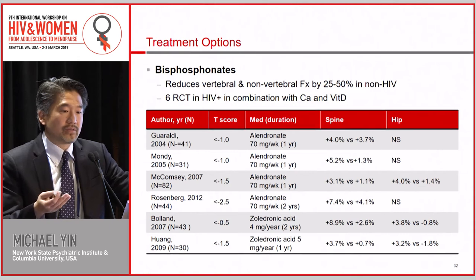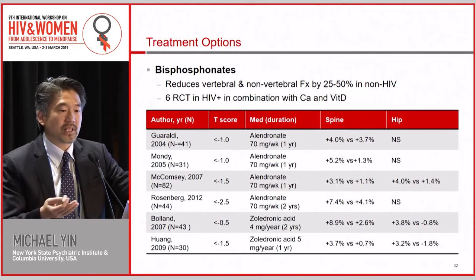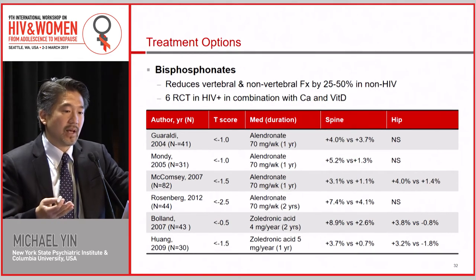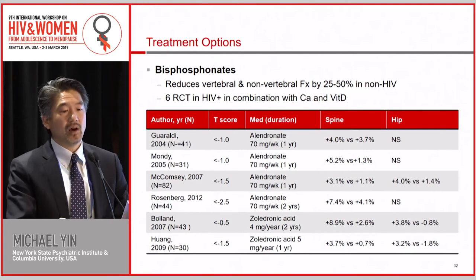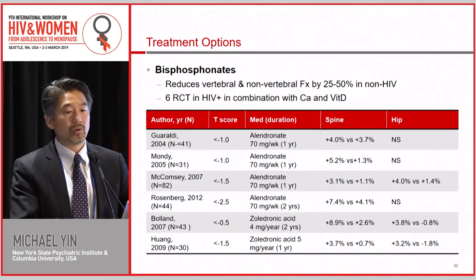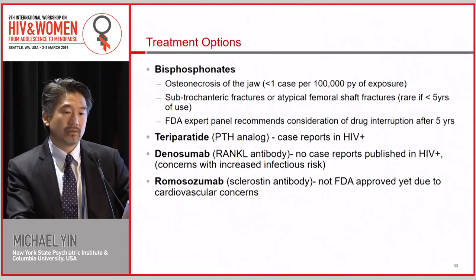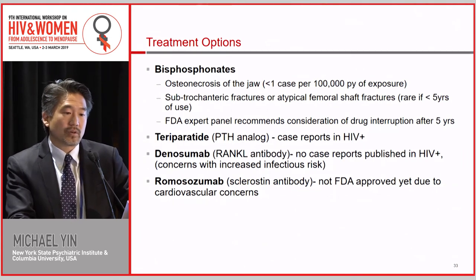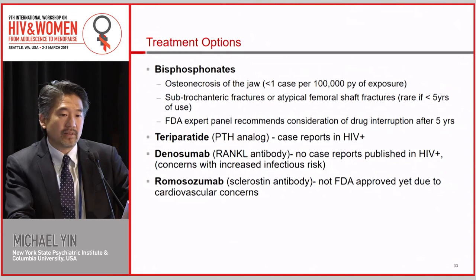When you change antiretrovirals and still have low bone density or osteoporosis, bisphosphonates are the first-line treatment. Six randomized clinical trials in HIV-infected individuals have shown no interactions with antiretroviral therapy and the same degree of effect on bone as in the general population — safe in both oral once-weekly form or zoledronic acid as a once-yearly infusion. Risks, though rare, include subtrochanteric atypical femoral shaft fractures — very rare with less than five years of use — and osteonecrosis of the jaw.